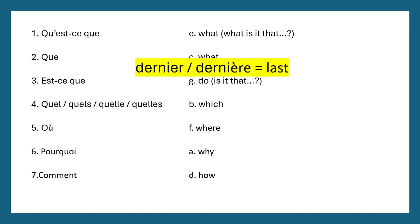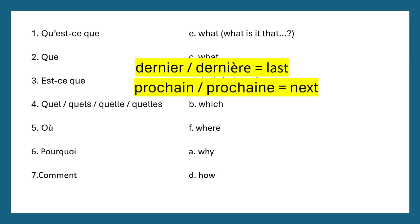These phrases are also useful to remember — they get mixed up a lot. 'Dernier' and 'dernière' both mean 'last' — masculine and feminine forms. So 'le week-end dernier' is 'last weekend' and 'la semaine dernière' is 'last week'. 'Prochain' and 'prochaine' both mean 'next'. Be careful because there is a difference in pronunciation: 'prochain' — masculine; 'prochaine' — feminine.